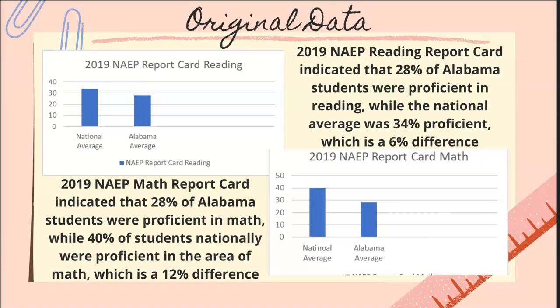The first slide of original data on the left side of your screen is the 2019 NAEP report card for reading. This report card indicates that 28% of Alabama students were proficient in reading, while the national average was 34% proficient — a 6% difference. On the bottom right is the 2019 NAEP report card for math, which indicated that 28% of Alabama students were proficient in math, while 40% of students nationally were proficient — a 12% difference.